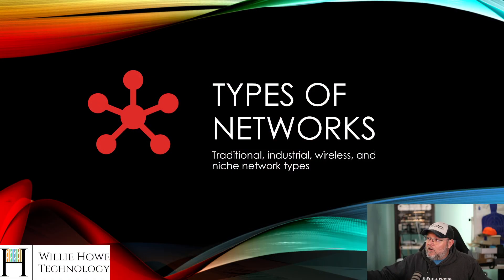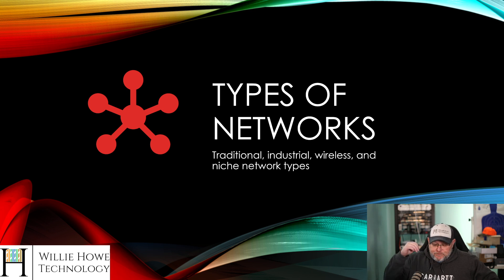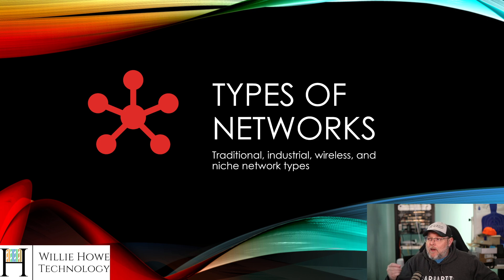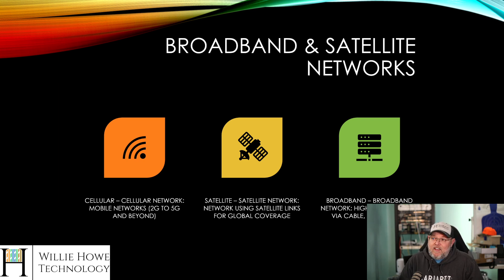So let's get to it. We've got the types of networks — whether traditional, industrial, wireless, and niche network types. I've got all of these alphabetized and broken up into sections. The first thing we're going to talk about is broadband and satellite networks.